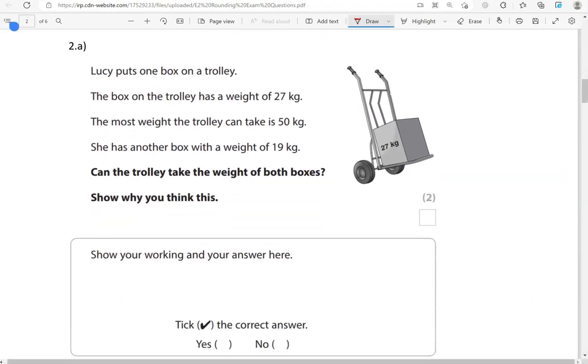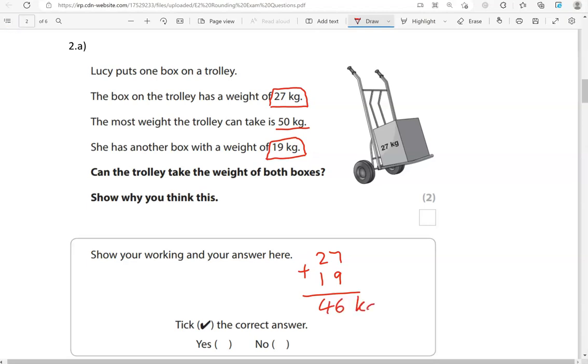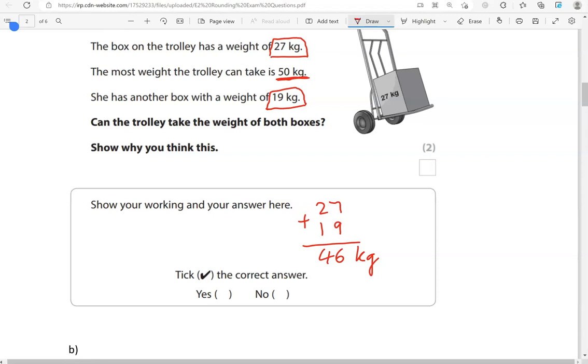Lucy puts one box on a trolley. The box on the trolley has a weight of 27 kilograms. The most weight the trolley can take is 50 kilograms. She has another box with a weight of 19 kilograms. Can the trolley take the weight of both boxes? Show why you think this. So the weight of the first box is 27 kilograms and the second box is 19 kilograms. If we add them together, 27 and 19, that gives us 46 kilograms. 46 is lower than 50, so less than 50 kilograms, which means the trolley can hold both of them. So we're going to say yes.